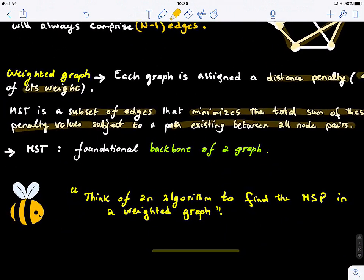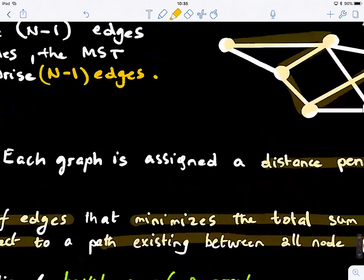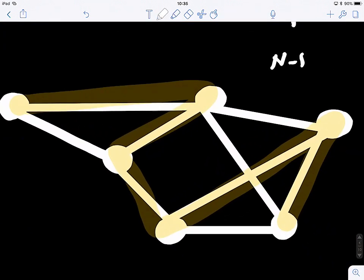So can you guys think about an algorithm to find the MST in a weighted graph? Can you write down an algorithm on how to find the minimum spanning tree of this graph? I'll give you a minute and try to just write down sketching algorithm, like the main steps. Simple, yes, quite simple.